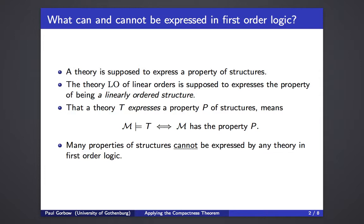To make this into a definition: theory T expresses a property P means that for every model, it models T if and only if it has the property P. Many properties of structures actually cannot be expressed by any theory in first-order logic, and we will see how this comes out.